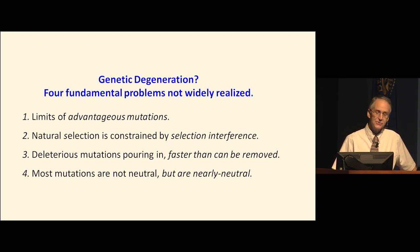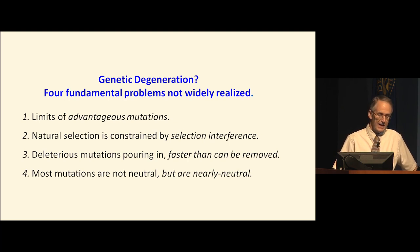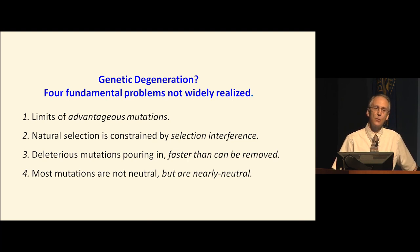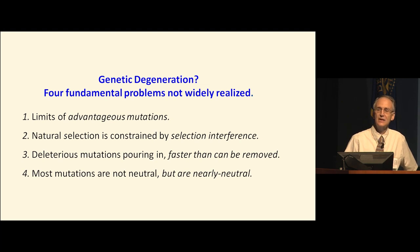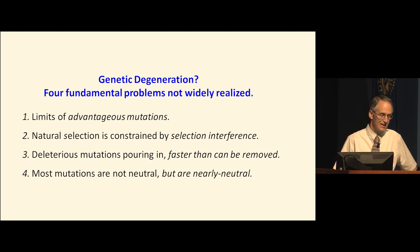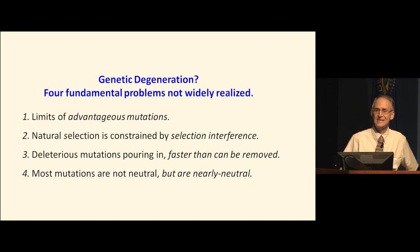Secondly, natural selection is severely constrained by something I call selection interference. Selecting for one trait interferes with selecting for another trait. When you have billions of traits segregating in the population, the selection process starts to work against itself, and you end up only being able to select the best or worst mutations. The third problem is that deleterious mutations are pouring into our population much faster than they can be selectively removed.